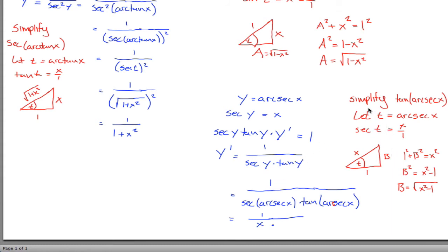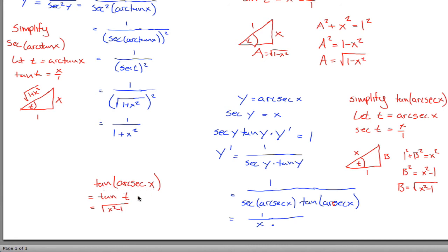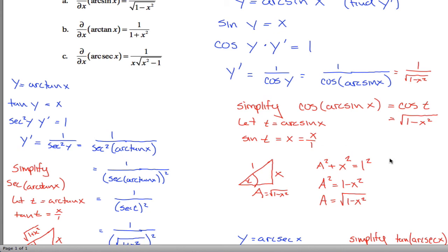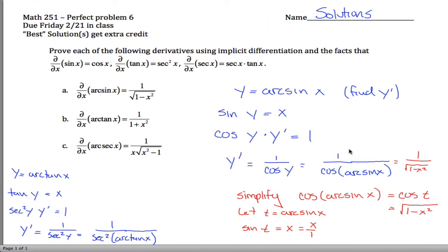What I'm trying to find is tangent of arc secant of x, which is tangent of t. Tangent is opposite over adjacent, so it's the square root of x squared minus 1 divided by 1, which is just the square root of x squared minus 1. Substituting back, y prime equals 1 over x times the square root of x squared minus 1. So the derivative of arc secant of x is 1 over x times the square root of x squared minus 1. That completes all three proofs.